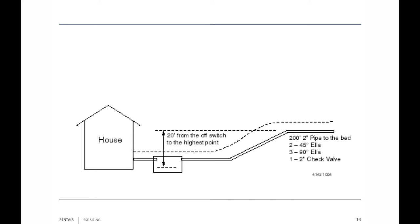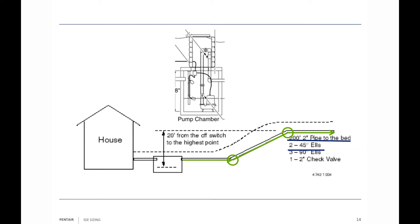Looking at the system layout, we've got 200 feet of two-inch pipe to the bed. That 200 feet includes two 45s and three 90s, plus the pipe inside the pit. There's also one check valve in the system. Remember, we talked about being able to pull the pump out without putting your face below ground level. Also, don't forget to drill the 1/8-inch hole one to two inches above the discharge pipe for priming purposes.